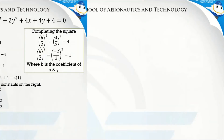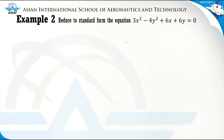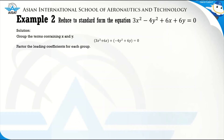For the second example, reduce to standard form: 3x² minus 4y² plus 6x plus 6y equals 0. Group the terms: (3x² plus 6x) plus (negative 4y² plus 6y) equals 0. Factor the leading coefficients: 3 from the first group and negative 4 from the second, giving 3(x² plus 2x) minus 4(y² minus (3/2)y) equals 0.